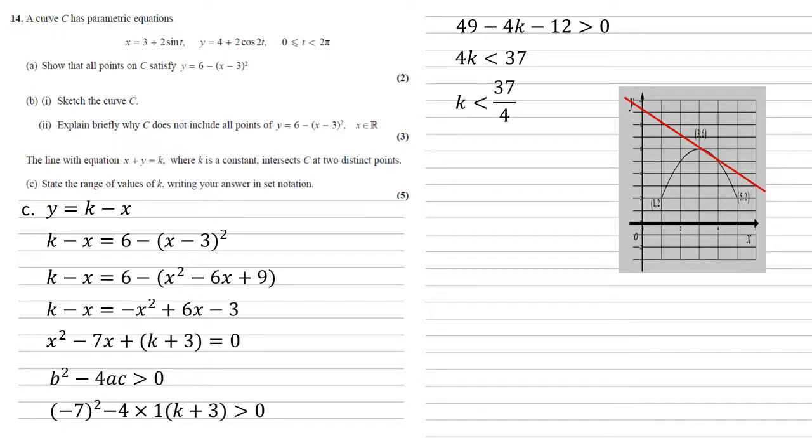Now if you imagine as k changes, this line will move downwards. The last point where it will cross our curve at two points is where the right hand point is 5, 2. After that, the straight line will only cross the curve on the left hand side.